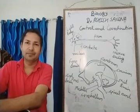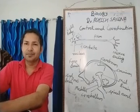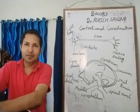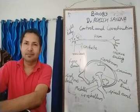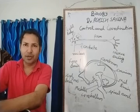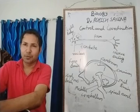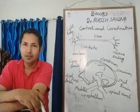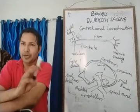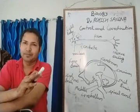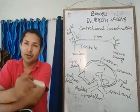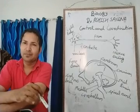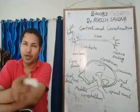Endocrine glands are generally ductless glands. The endocrine glands include: pituitary, thyroid, parathyroid, thymus, adrenal, pancreas, testes, and ovary. Pancreas, testes, and ovary are mixed glands because they release both hormones and enzymes.